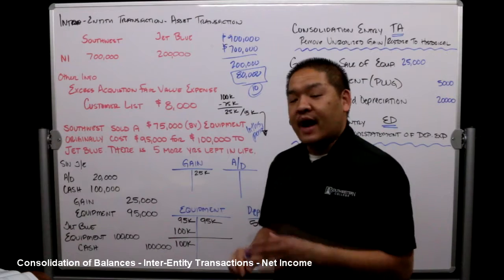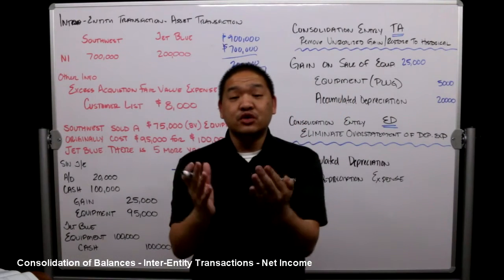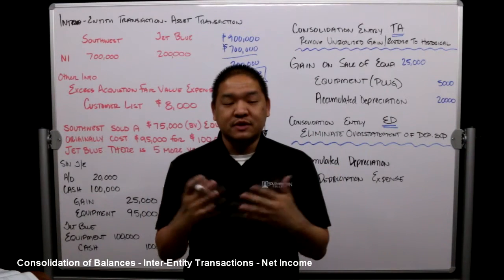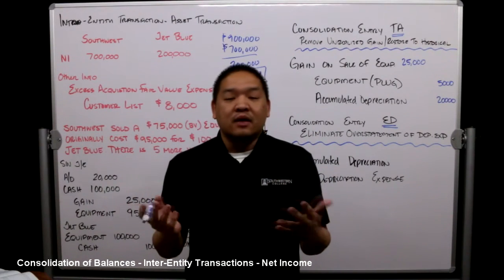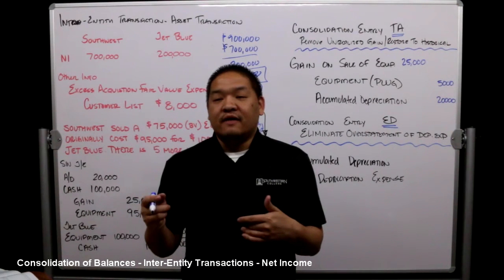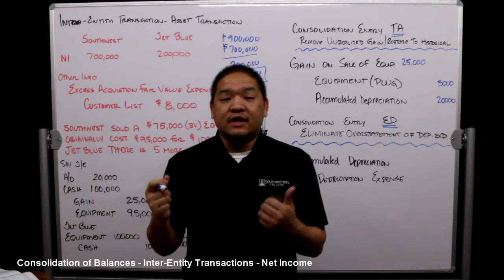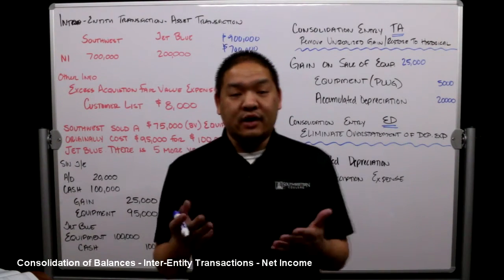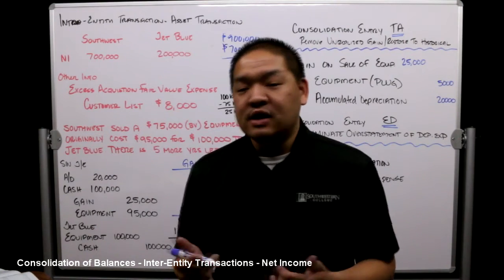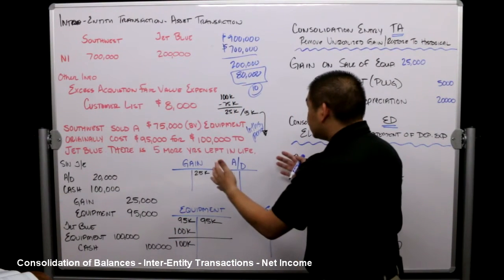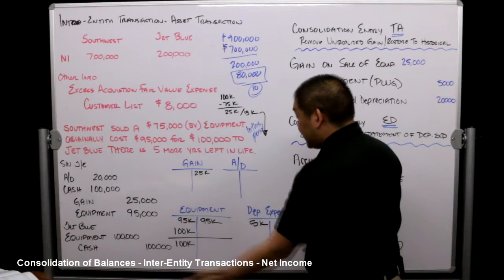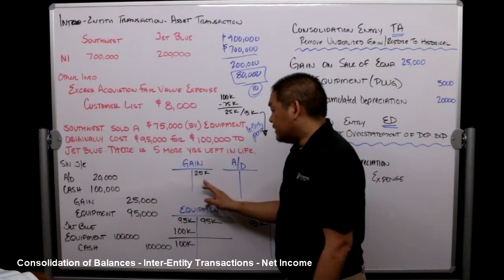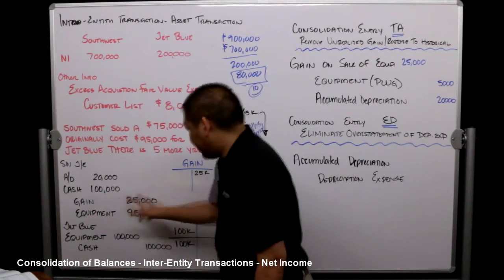Now let's assume we are consolidating. What we know from consolidations is we simply add up all of our balances. I also wanted to give you some T-accounts to see what happened on a consolidated basis. There would be a gain of $25,000 and equipment originally at $95,000.